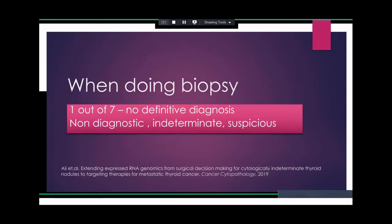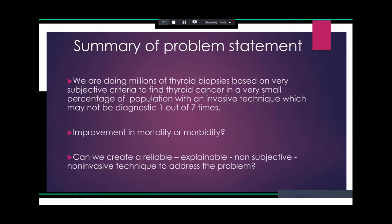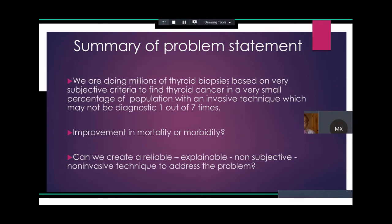Let's say we decided to do a biopsy. One out of seven nodules, we may not have a definitive diagnosis — it could be non-diagnostic, indeterminate, or suspicious. To summarize the problem statement: we are doing millions of thyroid biopsies based on very subjective criteria to find thyroid cancer in a very small percentage of the population, with an invasive technique that may not be diagnostic one out of seven times. Are we improving morbidity and mortality by doing these things?